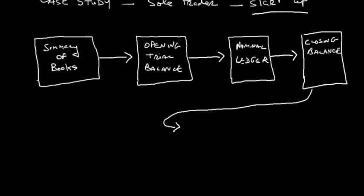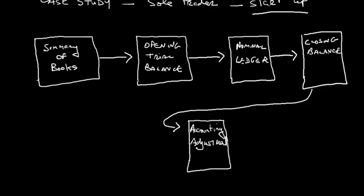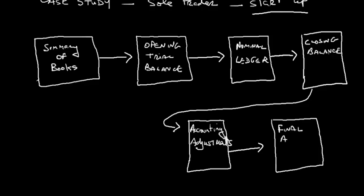After the closing trial balance, we may need to make some accounting adjustments — for example, for depreciation or closing stock. Once those adjustments are done, we can prepare the final accounts: the financial statements, including the profit and loss account and balance sheet for the first year in business.